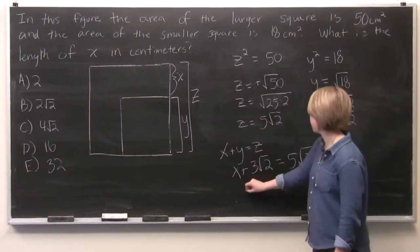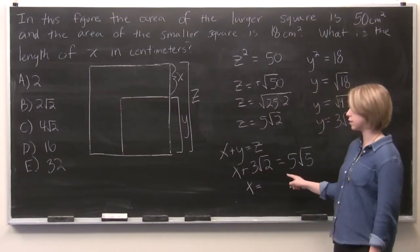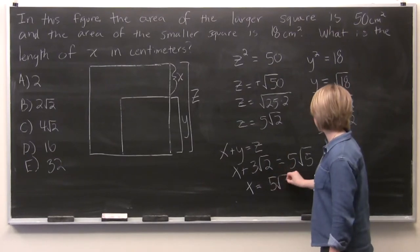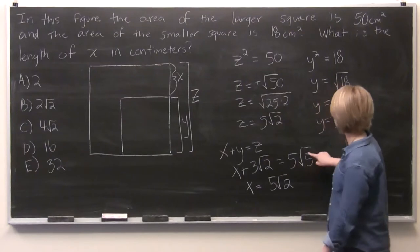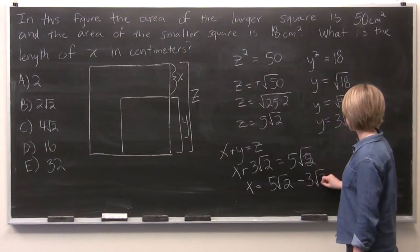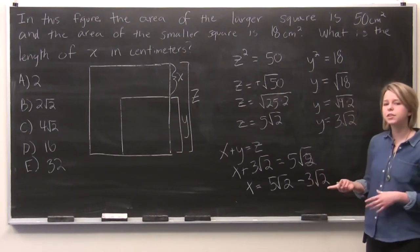And so we have x equals, if we subtract the 3 square root of 2 from both sides, 5 times the square root of 2 minus 3 times the square root of 2. This might look a little confusing, but like an algebra problem...